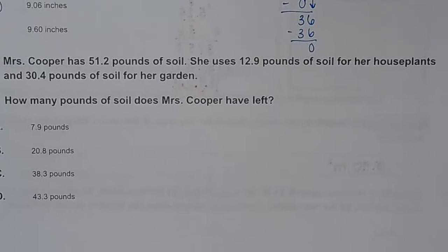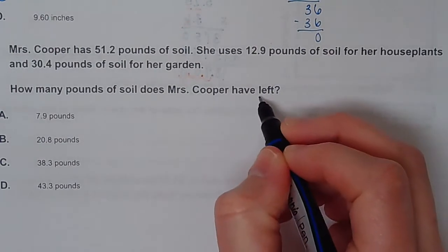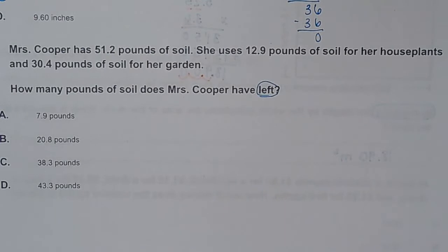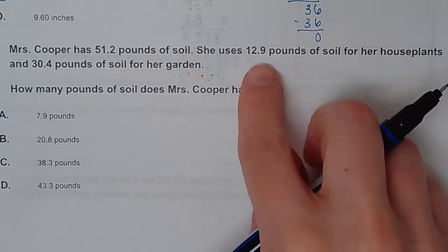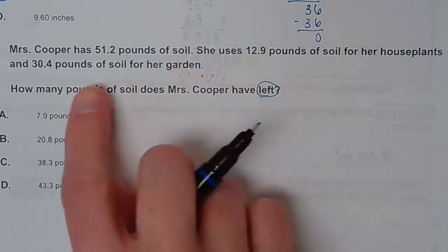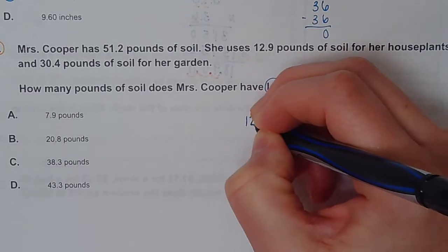Mrs. Cooper has 51.2 pounds of soil. She uses 12.9 pounds of soil for her house plants and 30.4 pounds of soil for her garden. How many pounds of soil does Mrs. Cooper have left? Anytime you see something about have left, it means subtraction. But this is a two-step problem because I got to figure out how much she's used. So 12.9 plus 30.4.